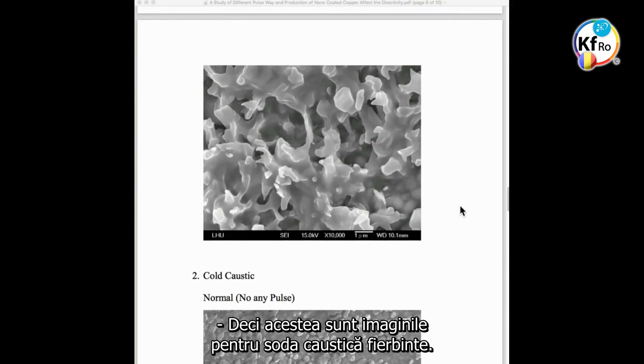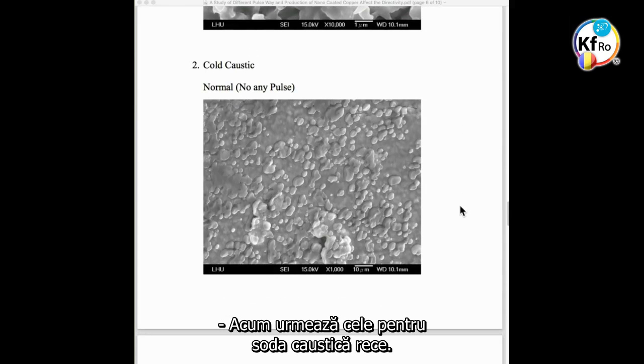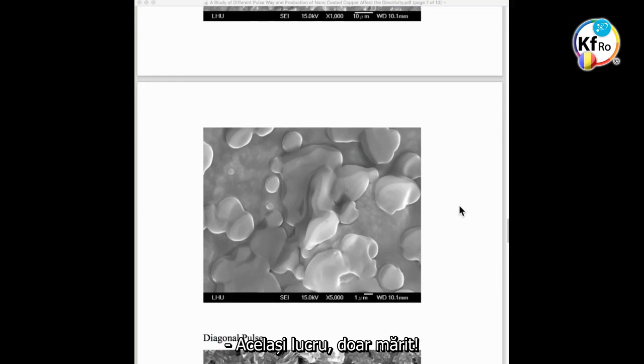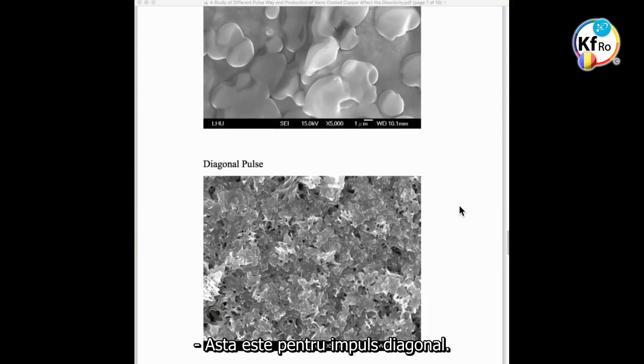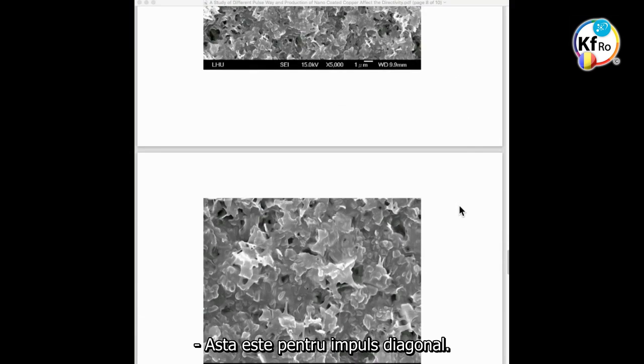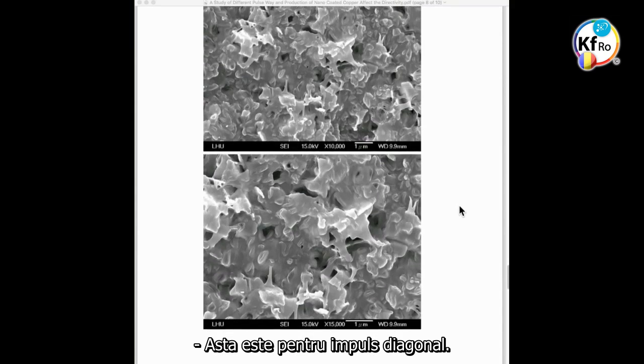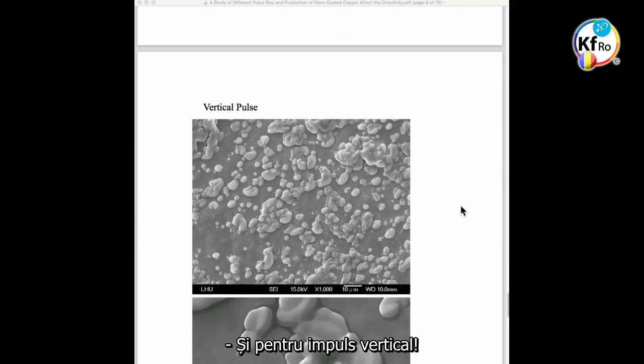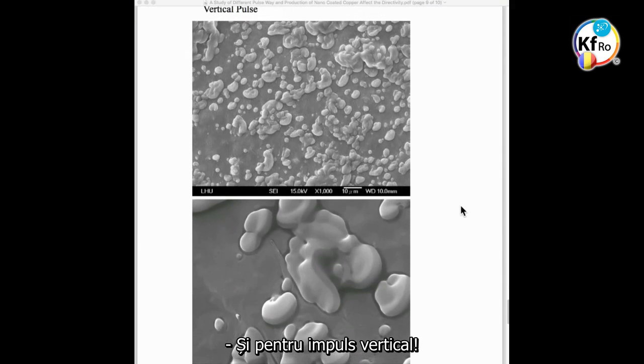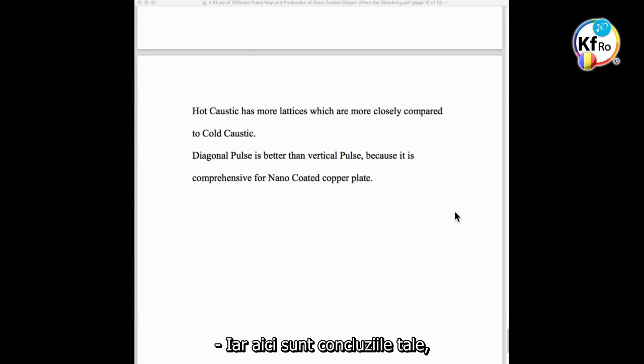So those are the hot caustic pictures, now we have the cold caustic. This is normal without any pulse. It's the same thing blown up. This is with the diagonal pulse. It's the same thing blown up. This is with the vertical pulse.